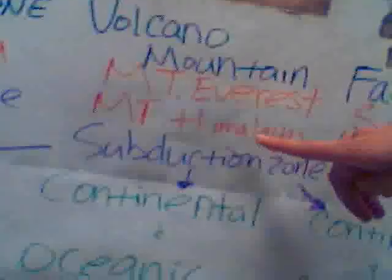This is how we showed it in our poster. The three types of plate boundaries are divergent, convergent, and transform. Examples of divergent plate boundaries are the Rift Zone in East Africa and the Mid-Ocean Ridge. Examples of convergent plate boundaries are volcanic mountains like Mount Everest and Mount Himalaya. The three kinds of convergent plate boundaries are oceanic-oceanic, continental-oceanic, and continental-continental. An example of a transform plate boundary is the San Andreas Fault, which causes earthquakes.